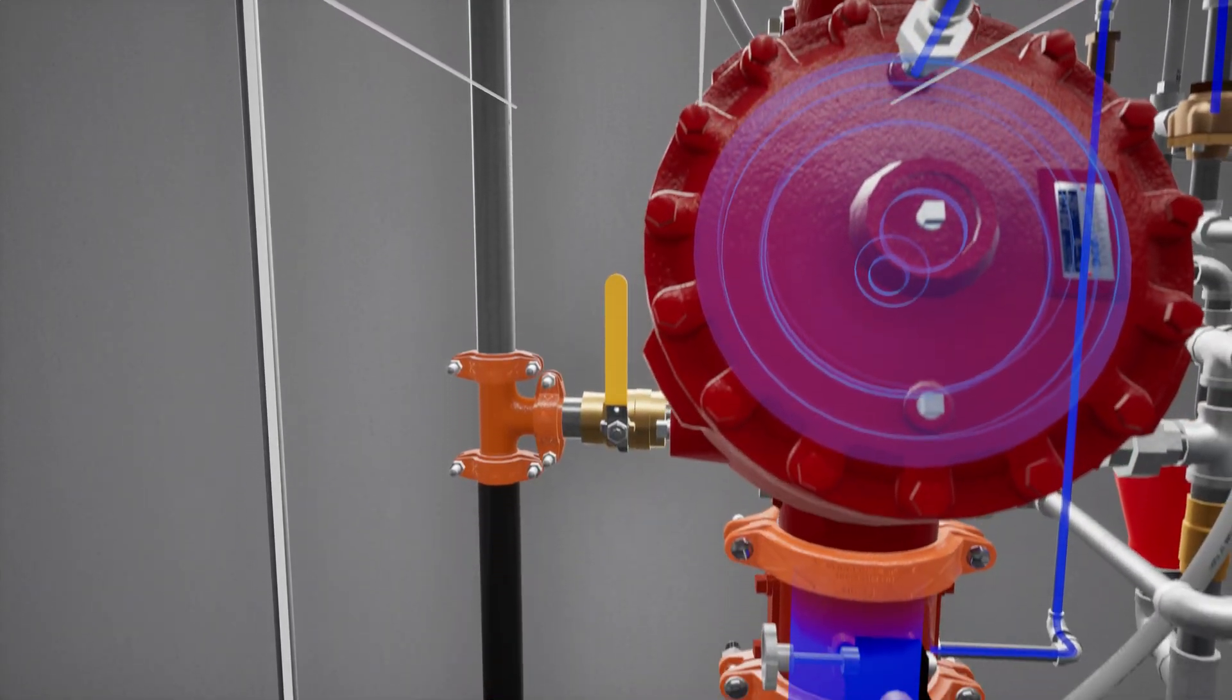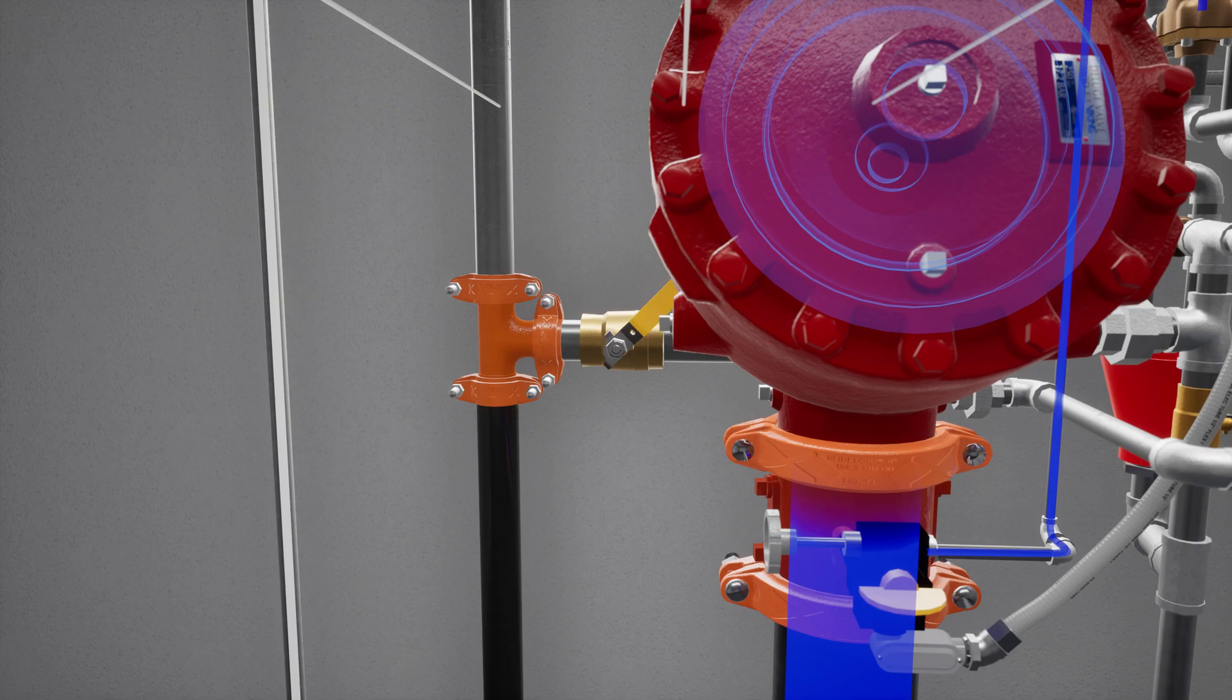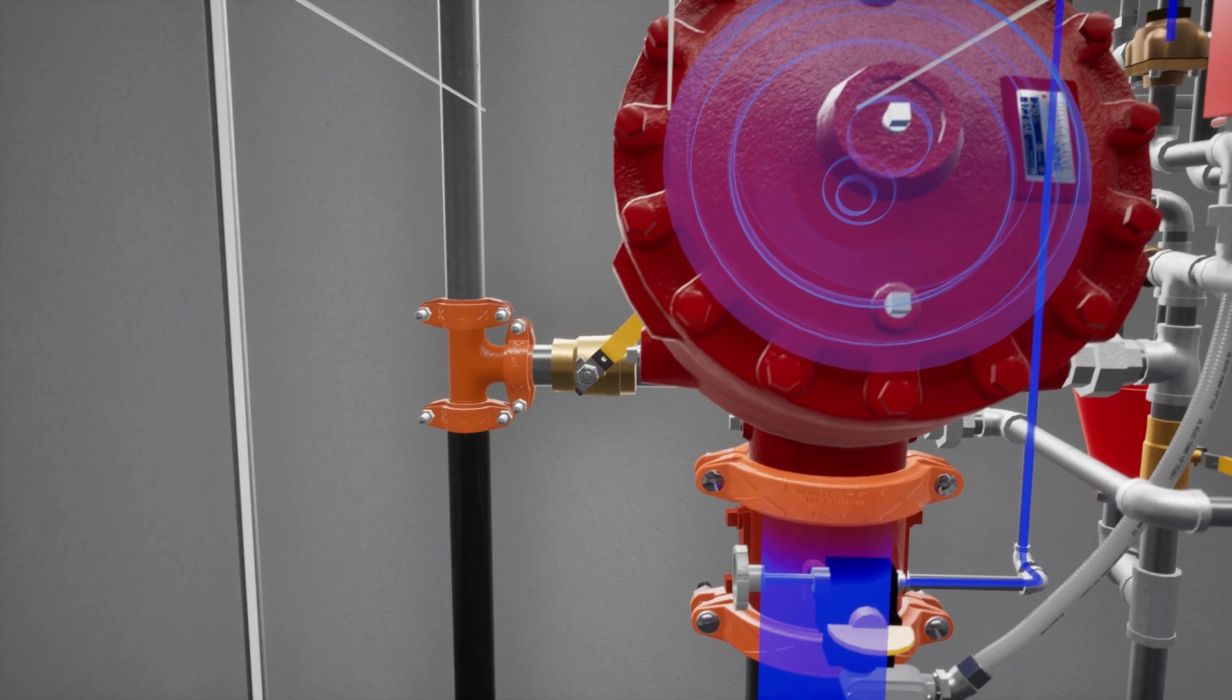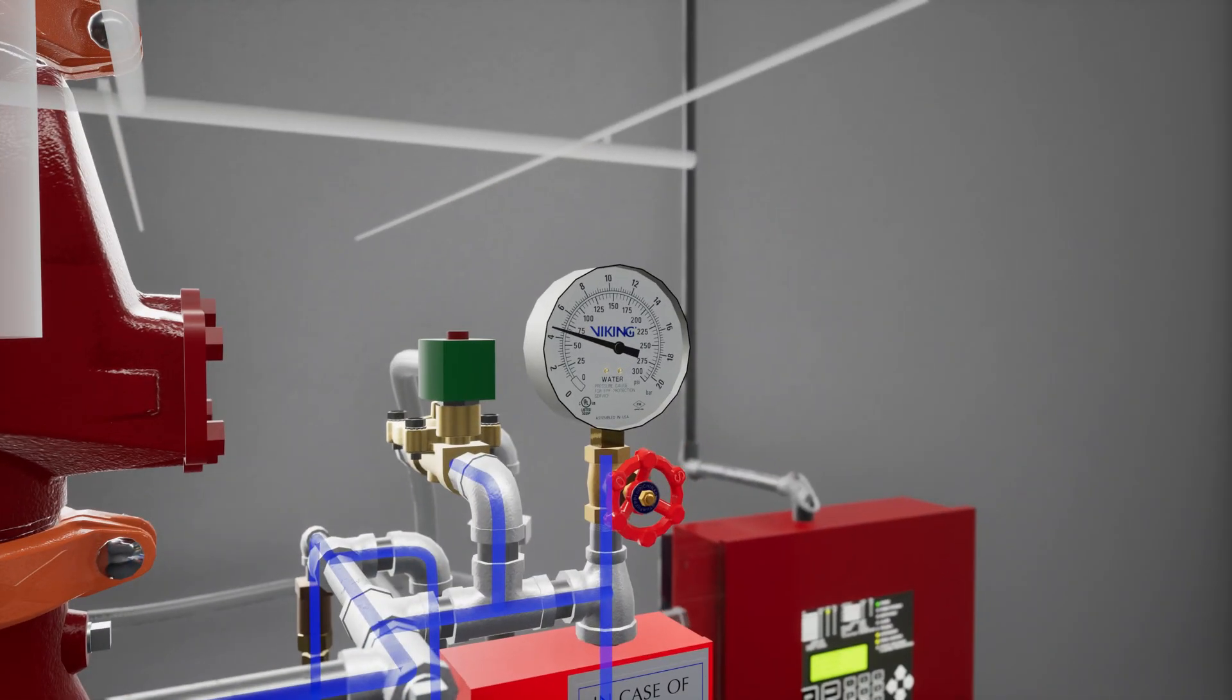Next, partially open the flow test valve. Verify water pressure has been established in the prime chamber.